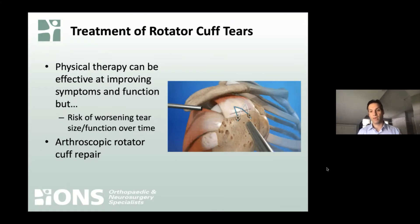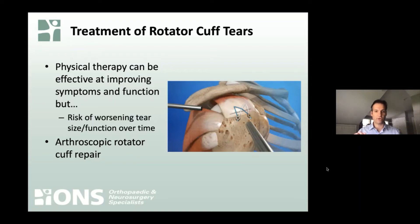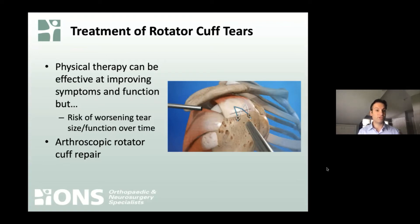How do we treat rotator cuff tears? Initially, we will often try physical therapy to strengthen the other rotator cuff muscles and tendons, as well as the deltoid and shoulder blade muscles, which can be very effective at improving symptoms and function. However, studies clearly show that if you have a full thickness tear, the risk of that tear increasing in size and leading to worsening function over time is real. So for younger, more active patients, acute tears, or tears involving multiple tendons, we may suggest arthroscopic surgery.